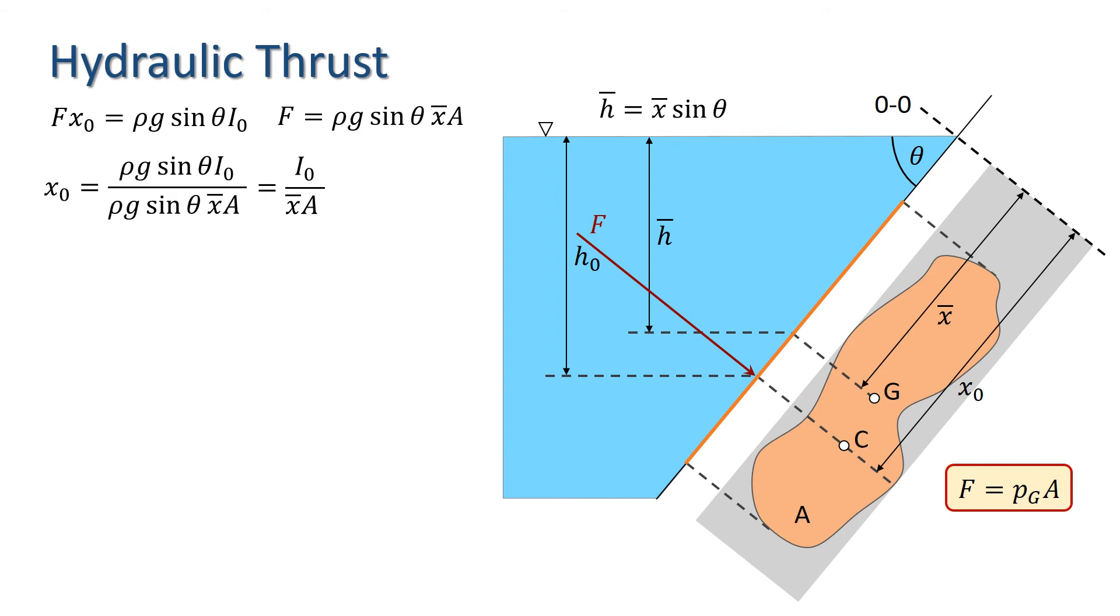We can apply the parallel axis rule I just mentioned to rewrite X0 in terms of the second moment of area about the centre of gravity, X bar and A.